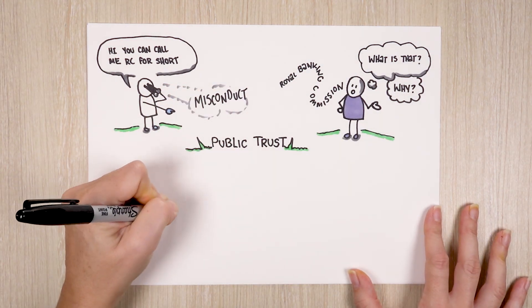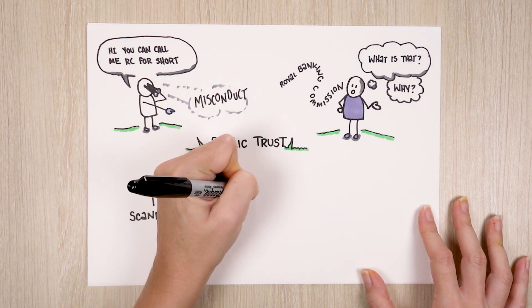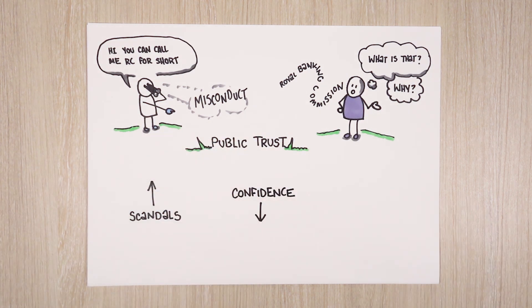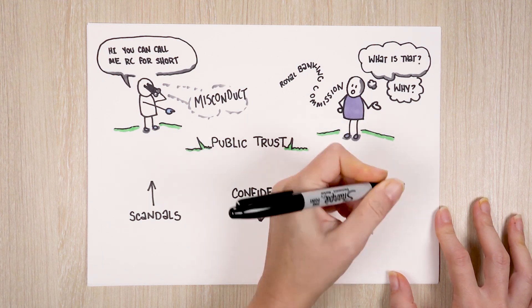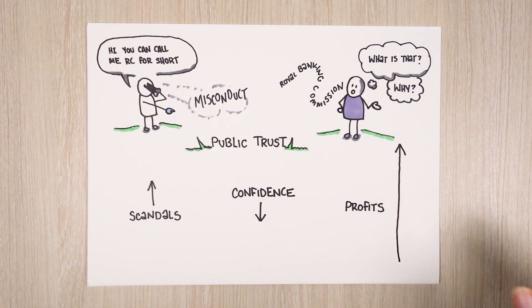A decade of scandals has seen consumer confidence in the financial services industry substantially decline while the major lenders brought in more than $35 billion in profits in the year to September 2017 alone.